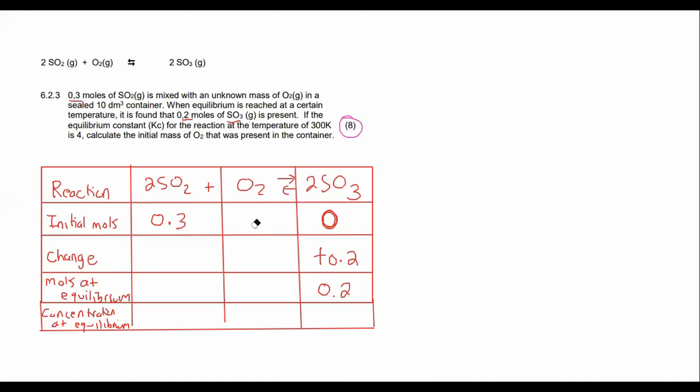So at equilibrium we have 0.2 moles of SO3. So how much did the SO3 go up by? It goes up by 0.2, so we say +0.2. I'm gonna put an X over here right now.